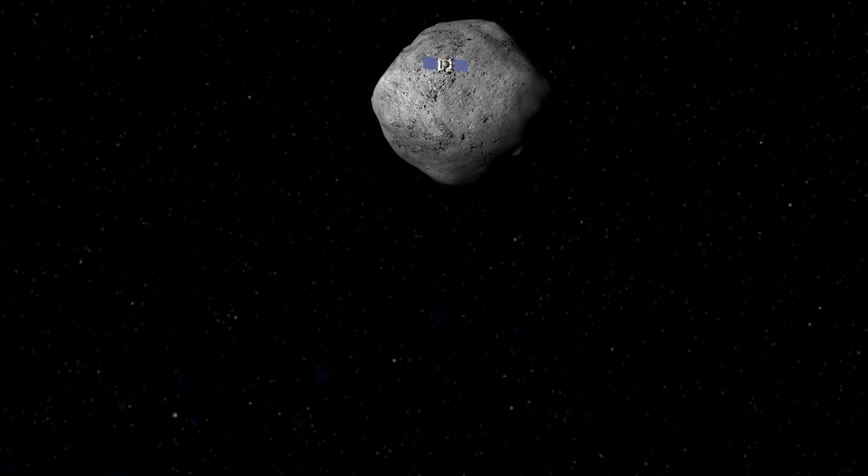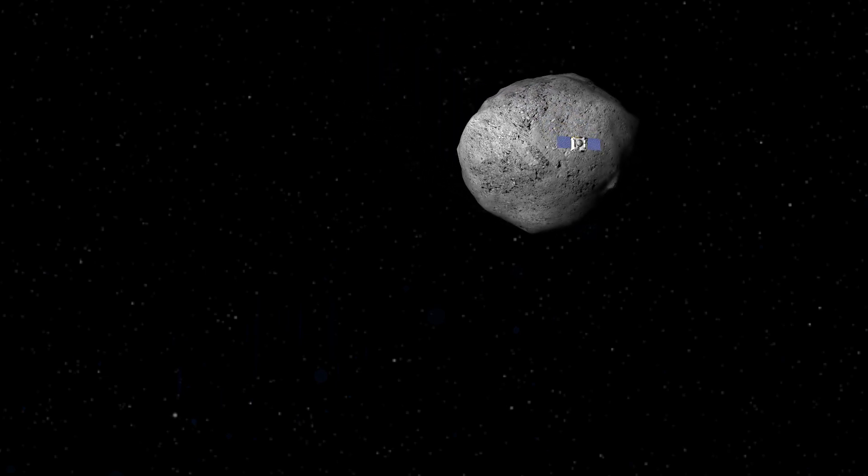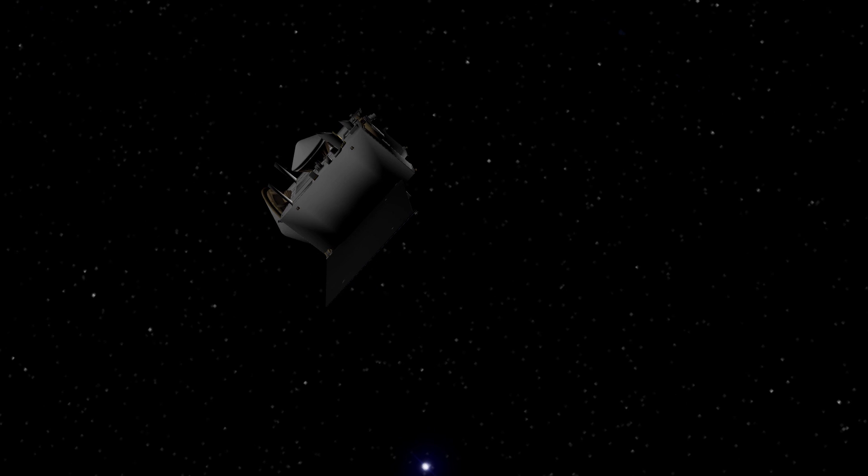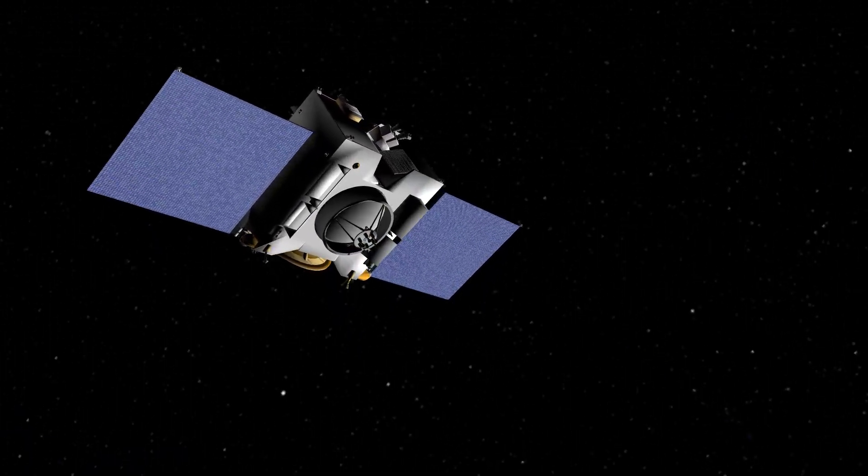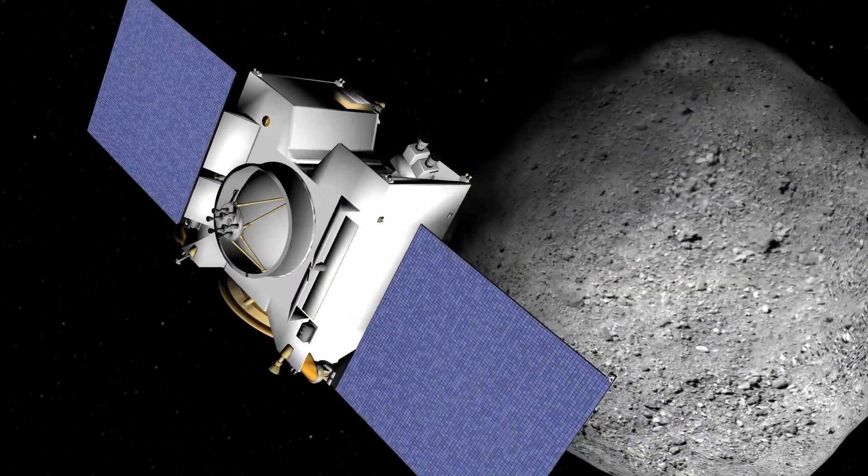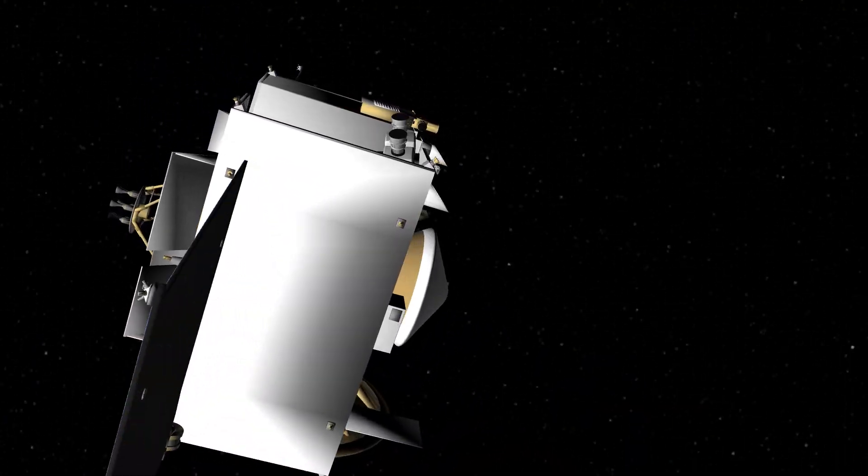When OSIRIS-REx began scanning for potential sites to collect samples from asteroid Bennu, you might think that a neutron spectrometer was used. The thing is, OSIRIS-REx doesn't have a neutron spectrometer.